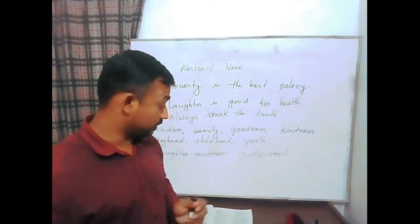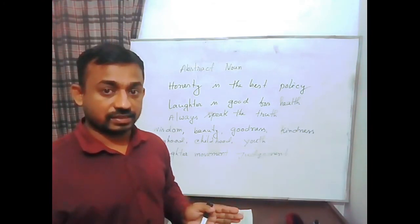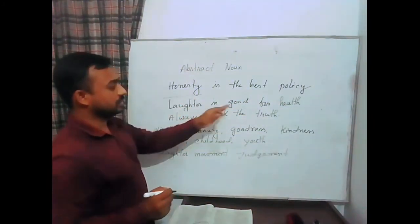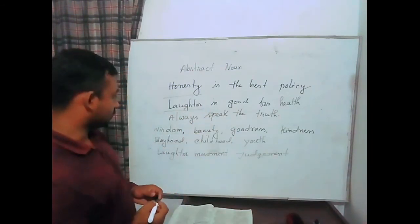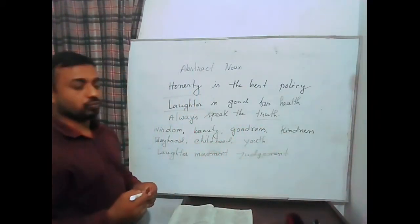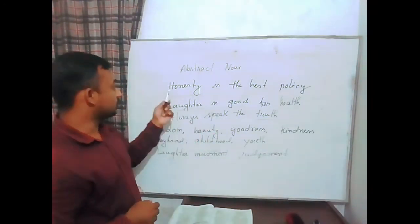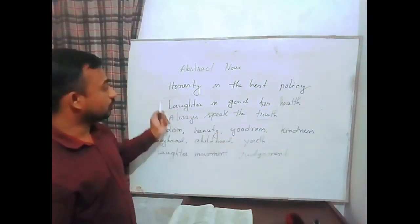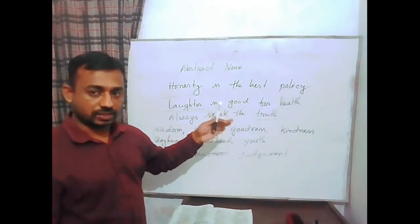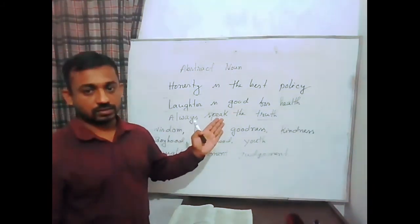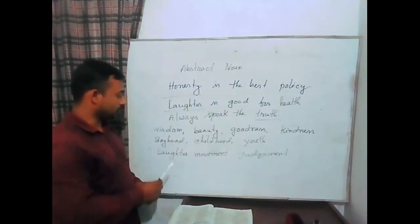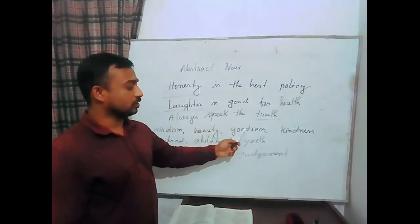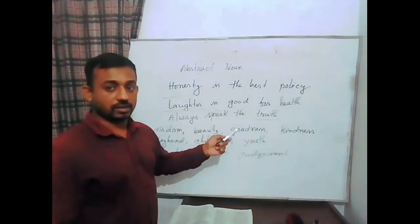Abstract noun doesn't have physical existence but we can feel it or understand it. For example: 'Honesty is the best policy' — here, 'honesty.' 'Laughter is good for health' — 'laughter.' 'Always speak the truth' — 'truth.' These three words are abstract nouns. Honesty is the name of a quality. Laughter is an action. And truth is also a quality. This type of word is called abstract noun. Besides these, more examples of abstract nouns are: wisdom, beauty, goodness, and kindness — these words are words of quality.